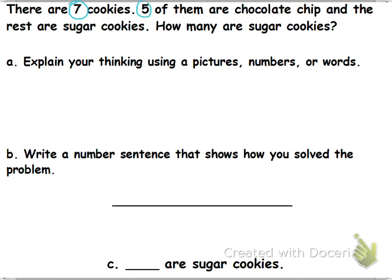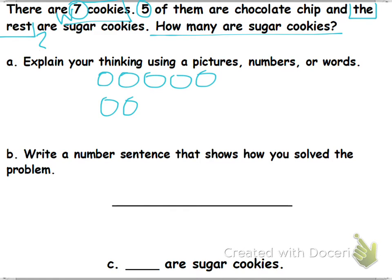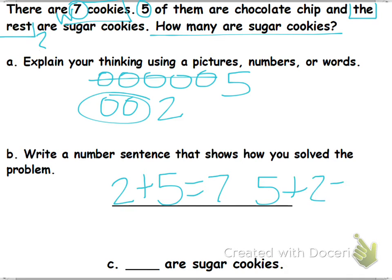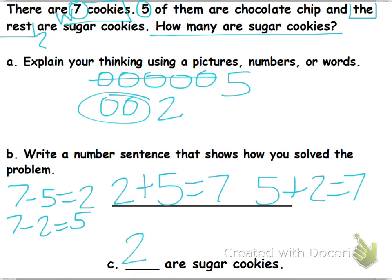So there are 7 cookies. 5 of them are chocolate chip and the rest are sugar cookies. How many are sugar cookies? Does the word problem tell us the whole? Yes, it does. It is 7, so you should have drew 7. What's the part they give us? 5. Cross out 5, circle the rest. How many is this? 2. What is your number sentence? You could have 2 plus 5 equals 7, 5 plus 2 equals 7, or if you did subtraction, 7 minus 5 equals 2, or 7 minus 2 equals 5. Which one was our mystery? 2, because they did not tell us 2 in the word problem.